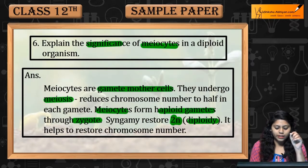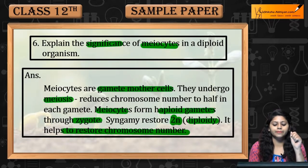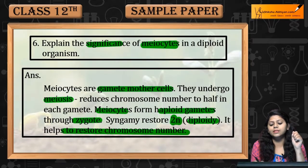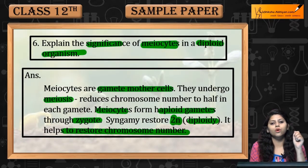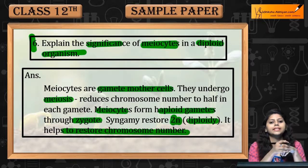यह जो diploids form होते हैं, they help to restore the chromosome number. So, यह है significance of meiocytes in diploid organisms. This is question number six.